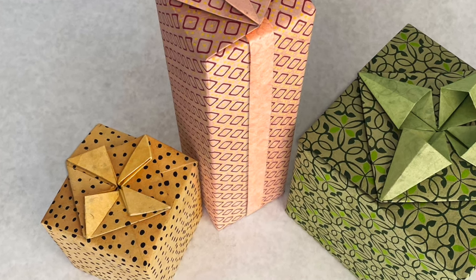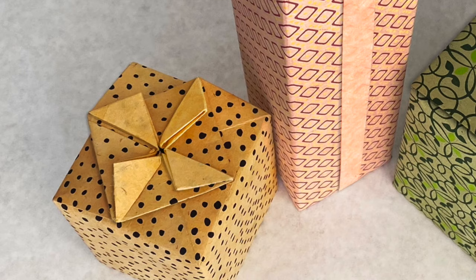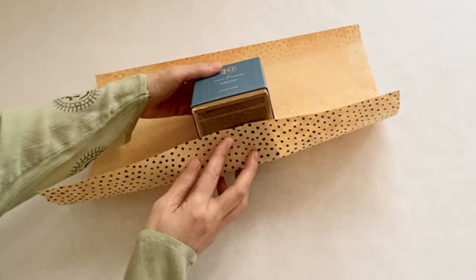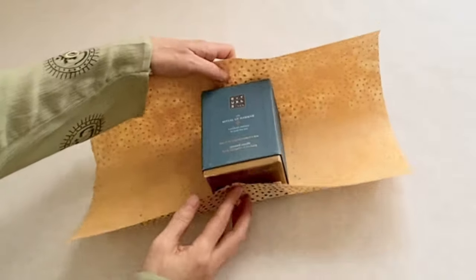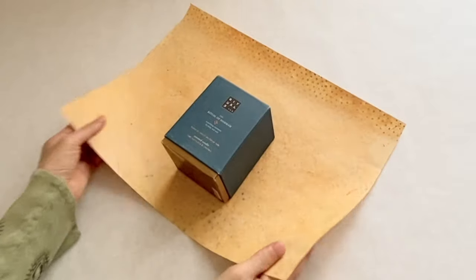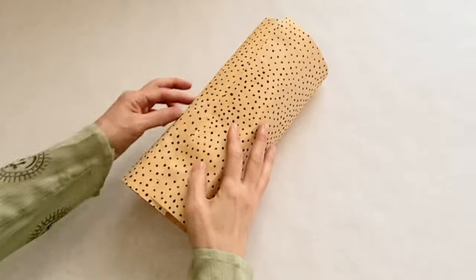I'd like to show you origami tato style gift wrapping. The paper size is not necessarily exact. Basically, the bottom is about two-thirds and the top part is a little longer. Make sure it covers the box with a little extra.